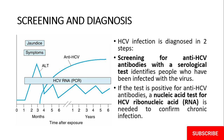Hepatitis C virus infection is diagnosed in two steps. First, screening for anti-hepatitis C virus antibodies with a serological test identifies people who have been infected with the virus. Second, if the test is positive, a nucleic acid test for hepatitis C virus ribonucleic acid (RNA) is needed to confirm the chronic infection.